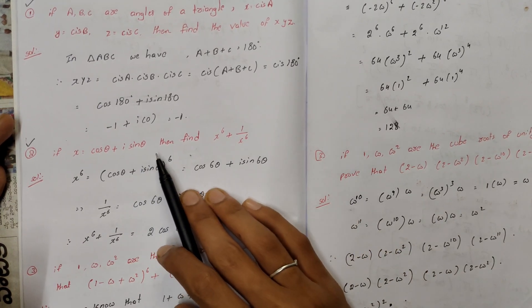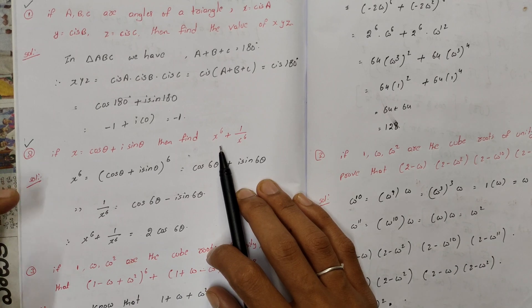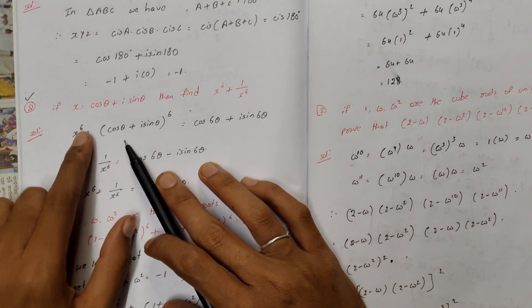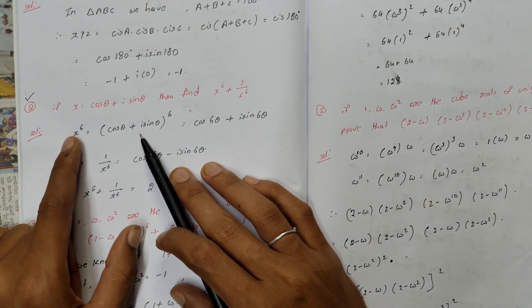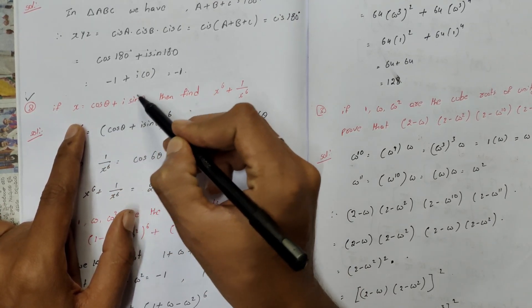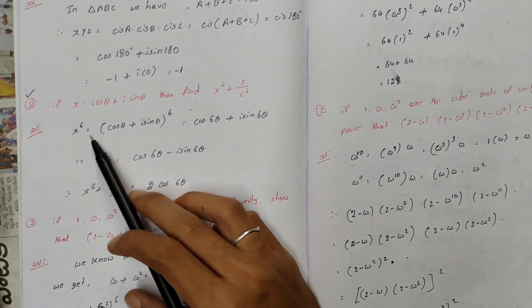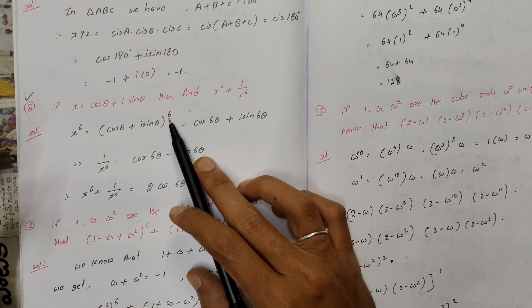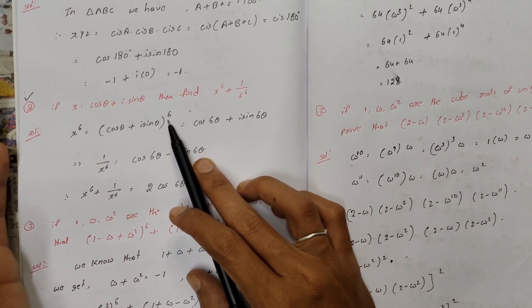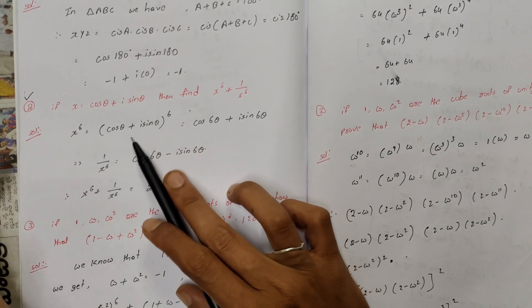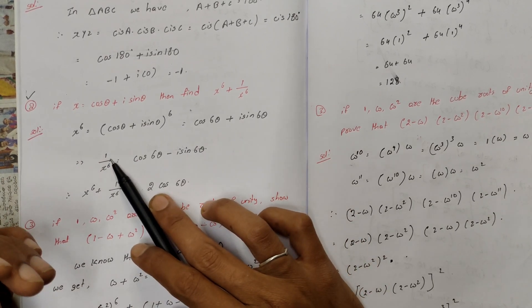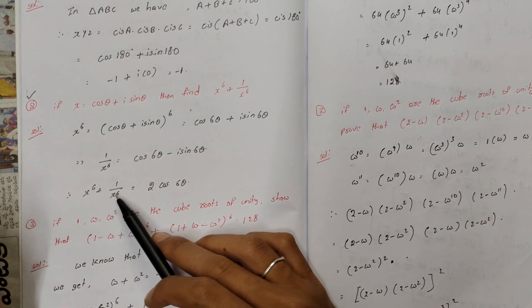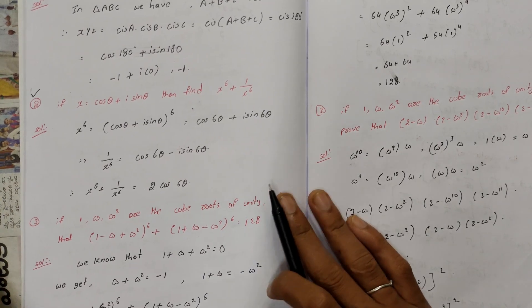Next question: if x is equal to cos theta plus i sin theta, then find x power 6 plus 1 by x power 6. So x power 6 is equal to cos theta plus i sin theta whole power 6. And 1 by x power 6 is equal to cos theta minus i sin theta whole power 6. Adding them gives 2 cos 6 theta.